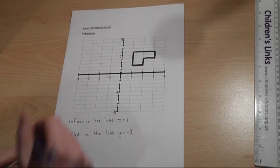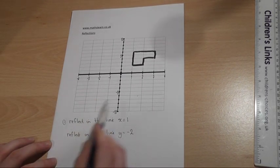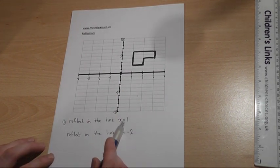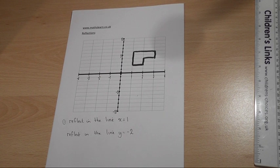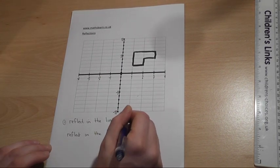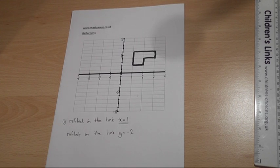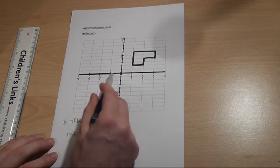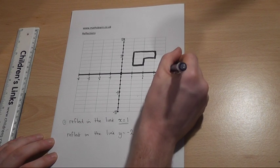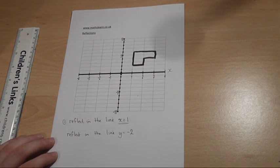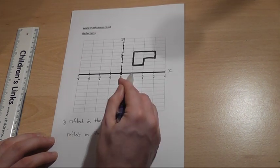Now, the first one, I want to reflect this shape in the line x equals 1. And it's this notation here which can be the most difficult part, but not with a bit of practice. Now then, we know this is our x-axis here, our x-coordinates, and here is x equals 1.